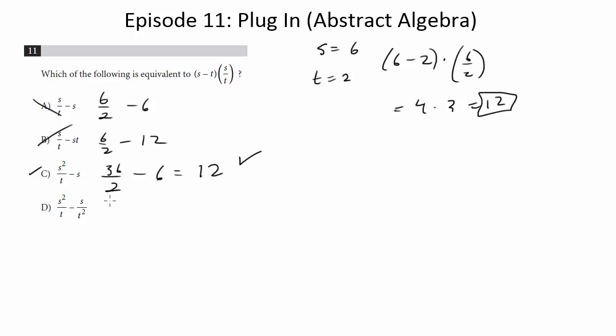Let's just check d, so 36 divided by two minus six divided by two squared which is four, so we get something that doesn't equal twelve, so we'll get rid of d and we go with choice c, so not too bad with plugging in.